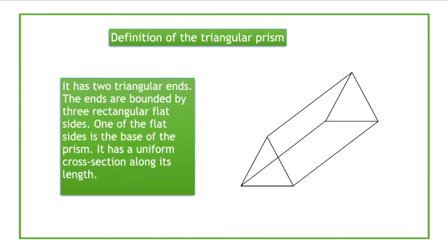The triangular prism has two triangular ends. The ends are bounded by three rectangular flat sides. One of the flat sides is the base of the prism. It has a uniform cross-section along its length.